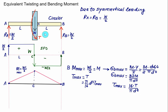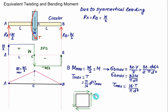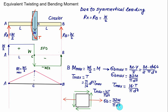Whenever we have two loads — one torque and one bending moment — the critical element at point C is subjected to two stresses: a normal stress sigma_x acting along the x-axis, and a shear stress tau_max. The value of tau_max equals 16T/(π·D³), and the bending stress sigma_x equals 32M/(π·D³). From these two stresses we can calculate the principal stresses and the maximum shear stress.